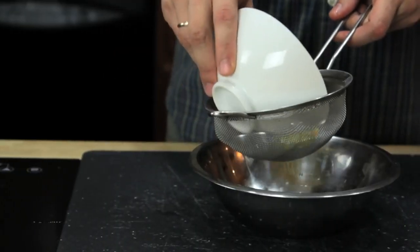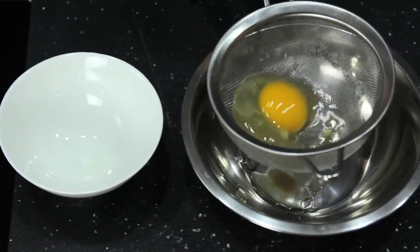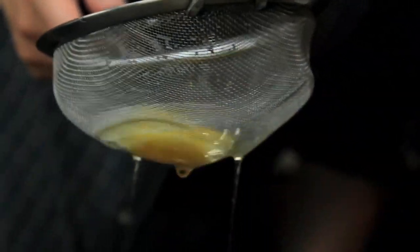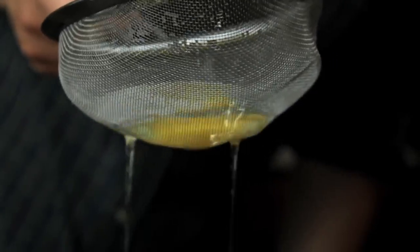You know, those really ugly ones with the wispy white floaters that completely ruin your brunch. To get rid of them, we're going to transfer our eggs to a fine mesh strainer and gently swirl it around until all the excess white is drained away. What you're left with is a nice, tight egg.